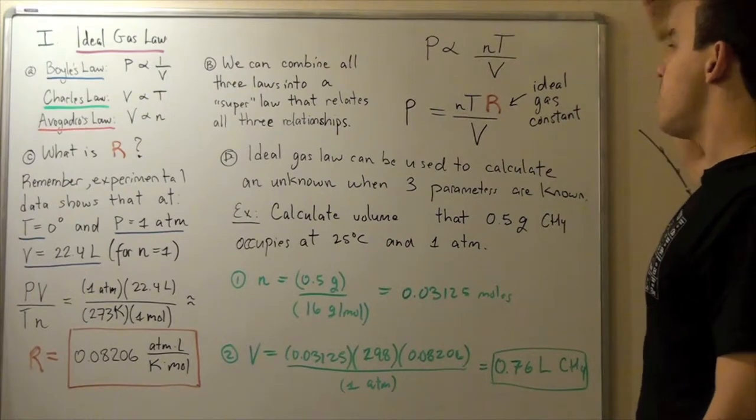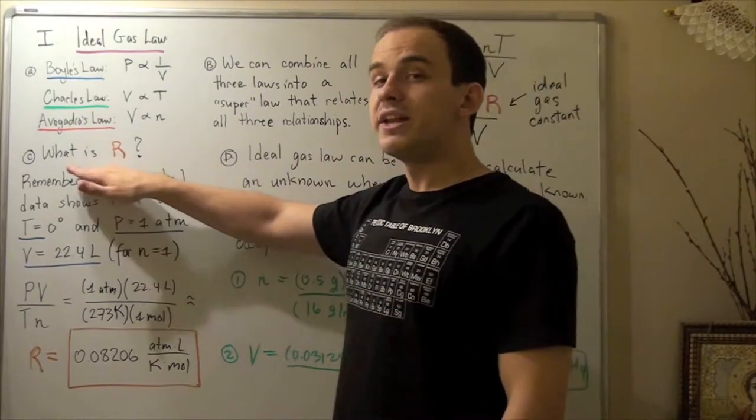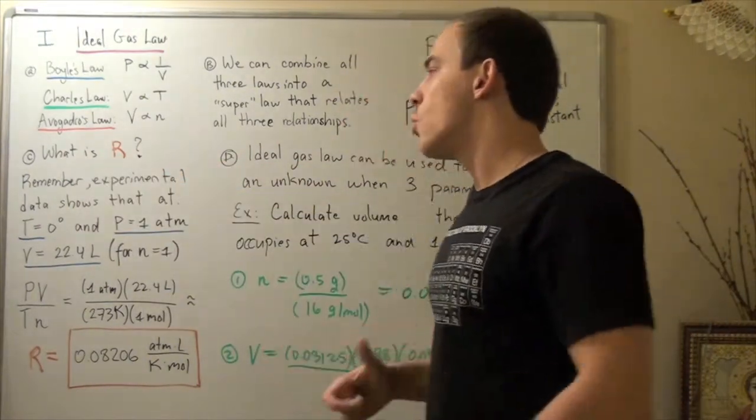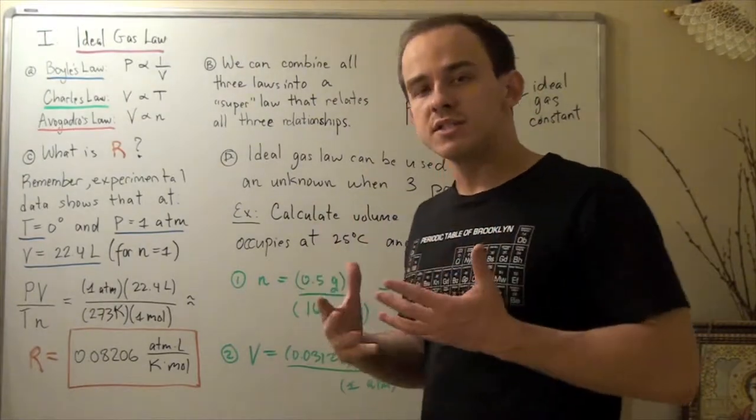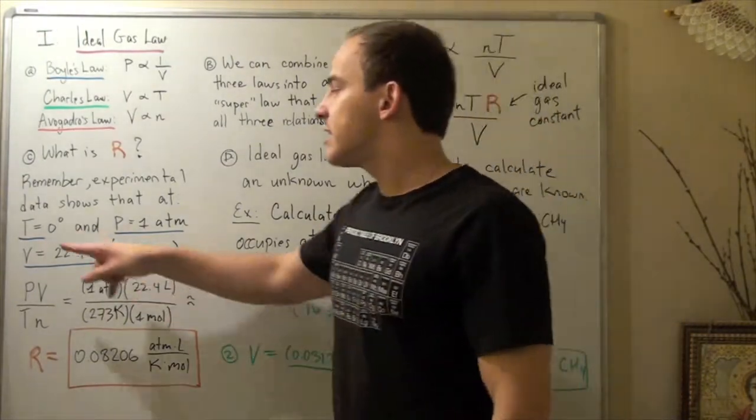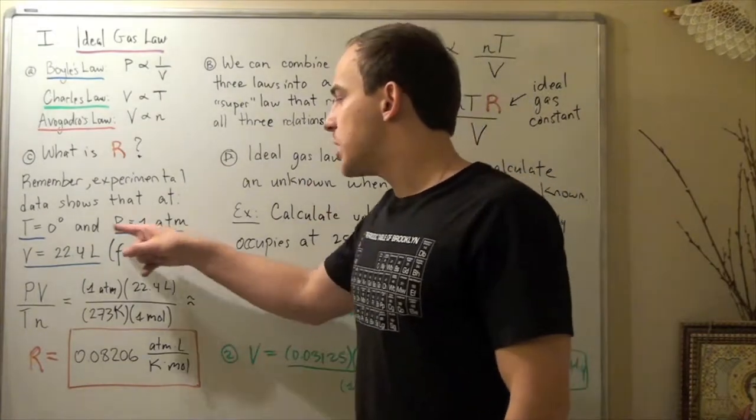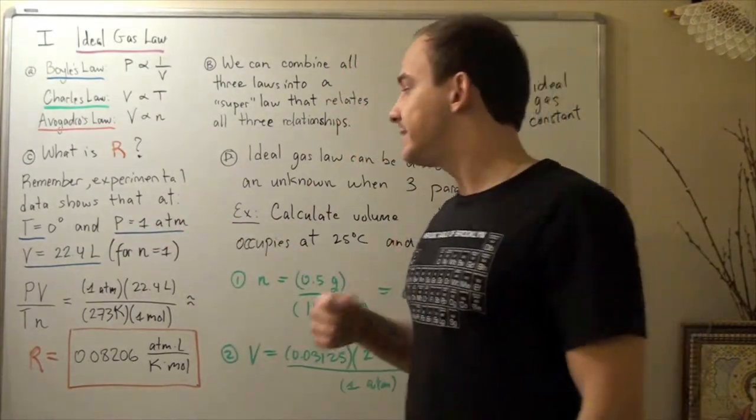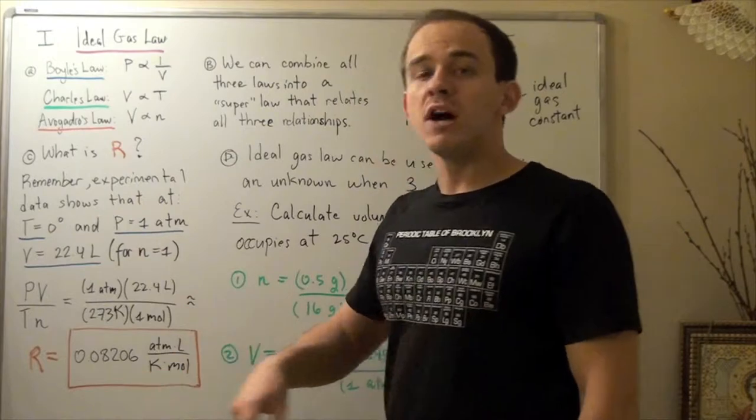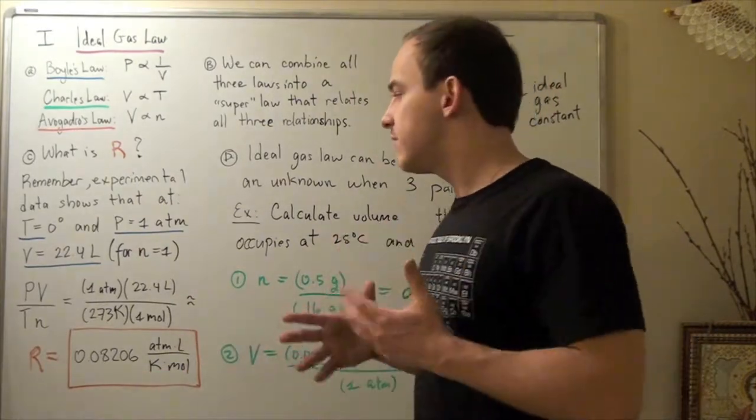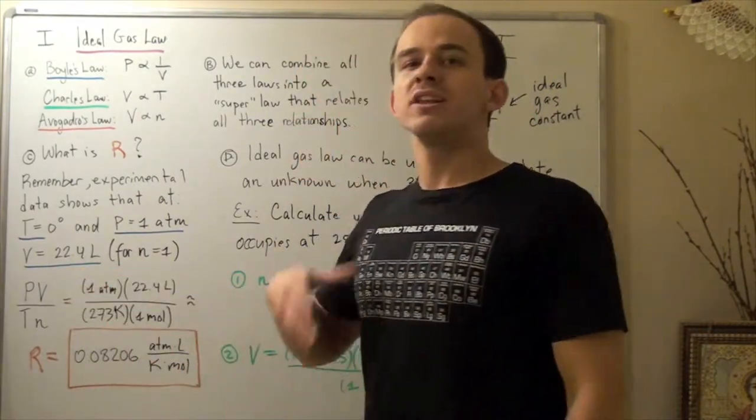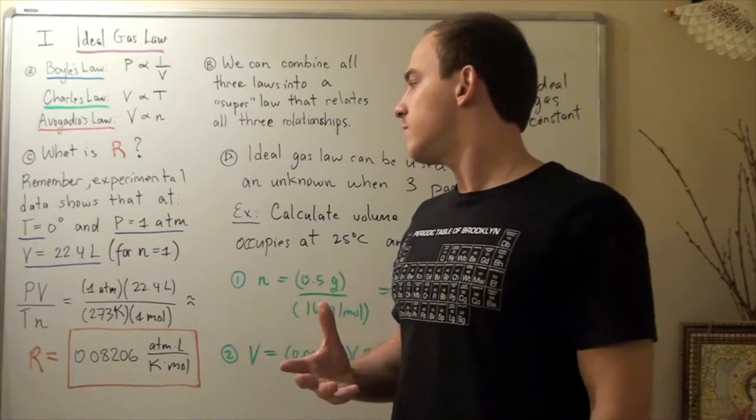So what problem remains? What is R? So from experimental results, data shows that a temperature of zero Celsius and a pressure of one atm and any one mole of any gas will give us 22.4 liters of volume.